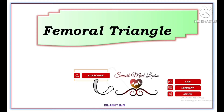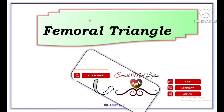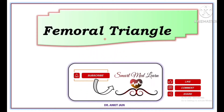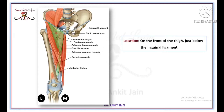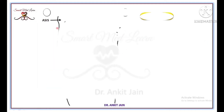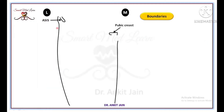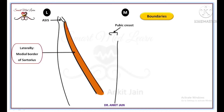In this video I am going to discuss the femoral triangle in detail. The femoral triangle is a triangular space on the front of the thigh, just below the inguinal ligament. The femoral triangle is bounded laterally by the medial border of sartorius muscle.